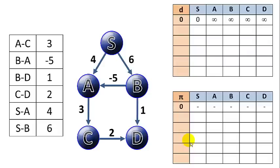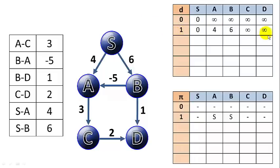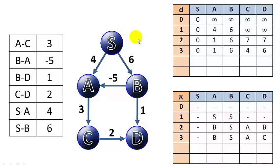Many instructors prefer to use a table format for tracking distances and pi values, where each row represents one iteration. Zero shows the initial distances, and subsequent rows show distances and predecessor values after each iteration. This notation works exactly the same as noting the distances and pi values directly next to each vertex in the graph.